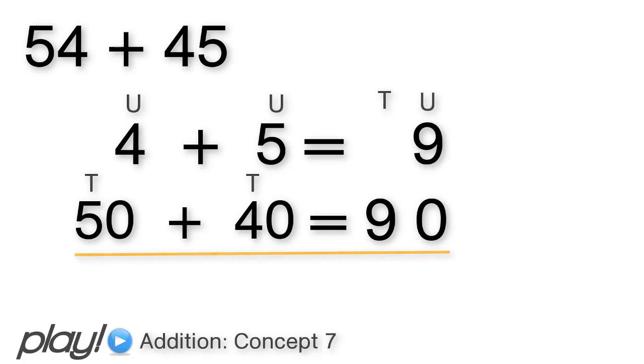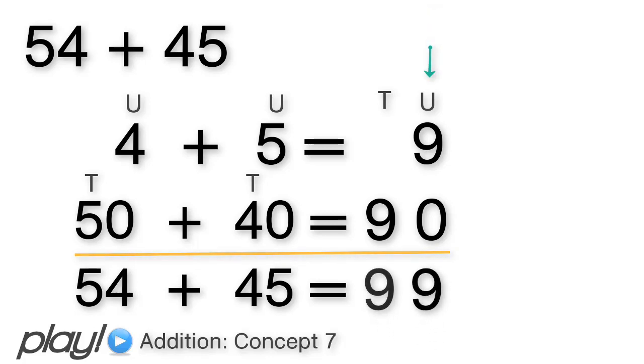Therefore, 54 plus 45, we must add up the two numbers, always starting with the units: 9 units and 9 tens to give 99.